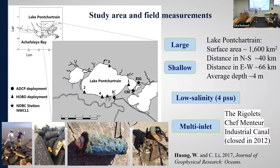My study area is Lake Pontchartrain, located on the northern side of New Orleans, Louisiana. It is semi-enclosed because the connections to the open ocean are mainly through three very narrow inlets, making the lake's connection to the open ocean very limited. The lake is large and shallow — the average depth is about four meters. Because of the limited connection to the open ocean, the salinity is also very low, with an average salinity value of about four. My advisor shared datasets from ADCP deployments, including water level and velocity data from the three inlets obtained in 2008.